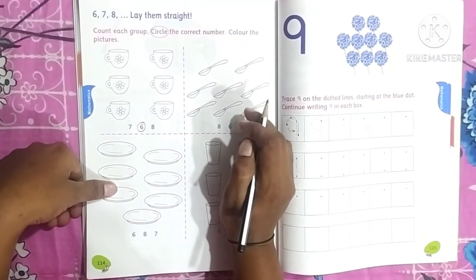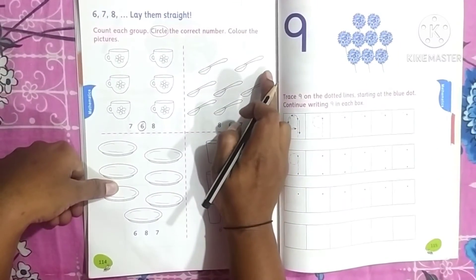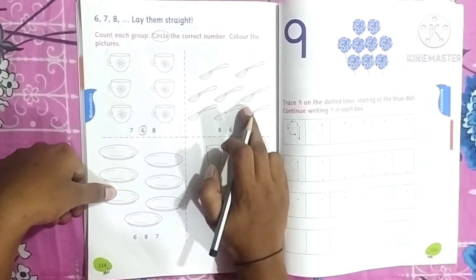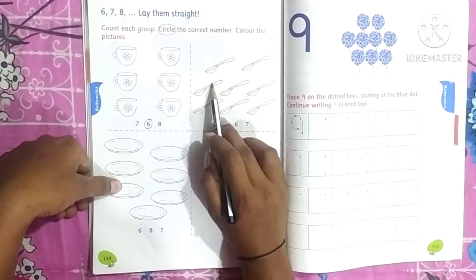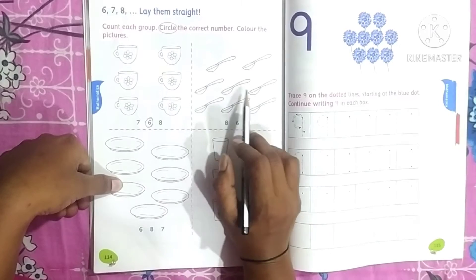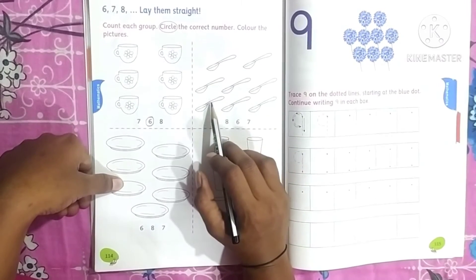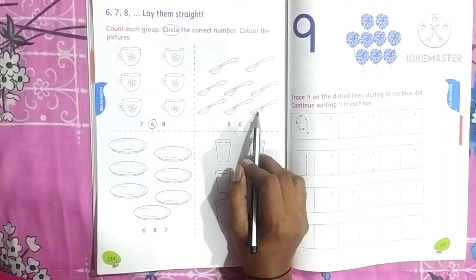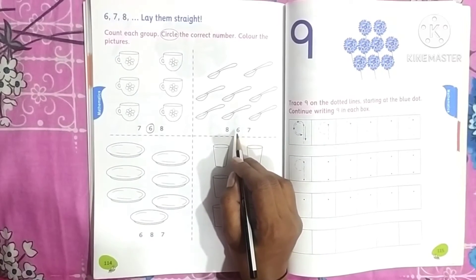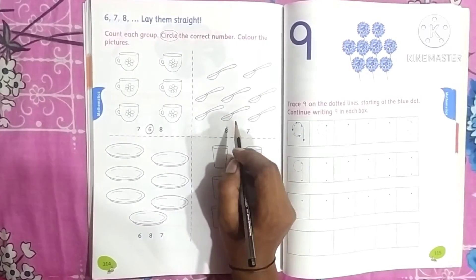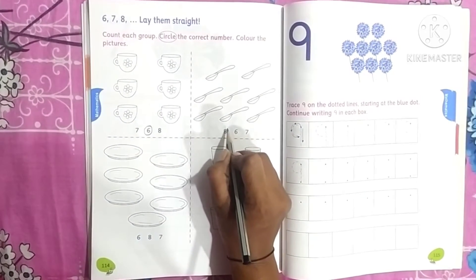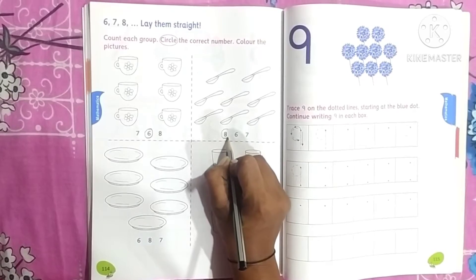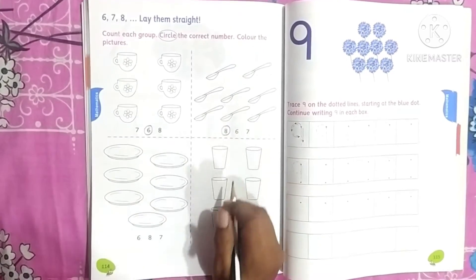Then there are more spoons here. Count, students: 1, 2, 3, 4, 5, 6, 7, 8. How many spoons? 8. Okay students, circle the correct number — 8.